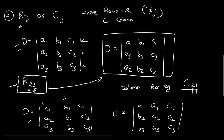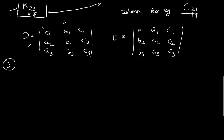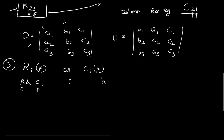The next symbol of operation that we are going to discuss is denoted by rik or cik, where r and c are our rows and columns respectively. Here, i is basically the number of the row or column on which you are doing the operation, and k is basically a real number that is not equal to zero. This symbol is used to denote multiplying all elements of the i-th row or column by k.